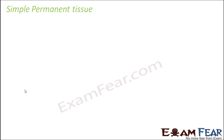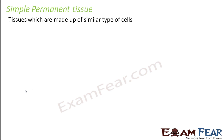We will start with simple permanent tissue. These are tissues made up of similar types of cells — all cells present are similar to each other in structure and function, though not exactly the same. Because all the cells are similar, there is no complexity involved, and that is why they are called simple permanent tissue.